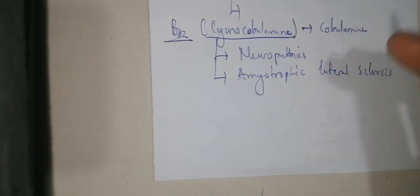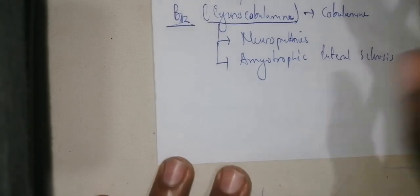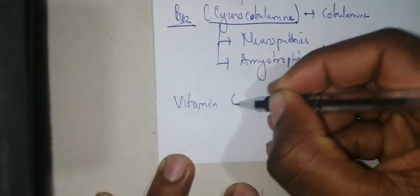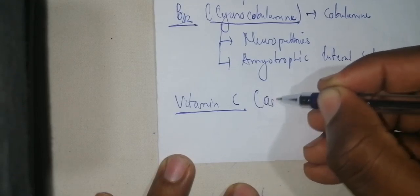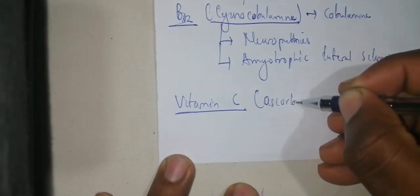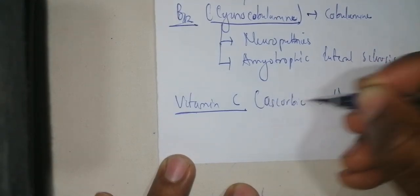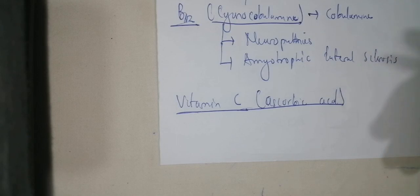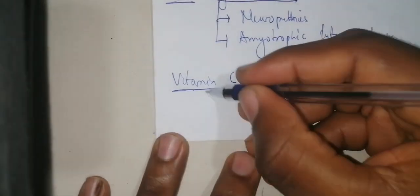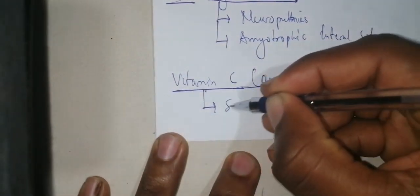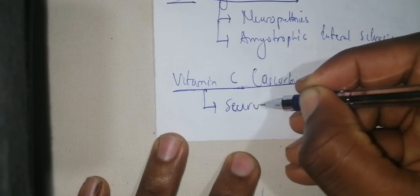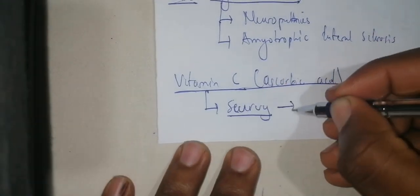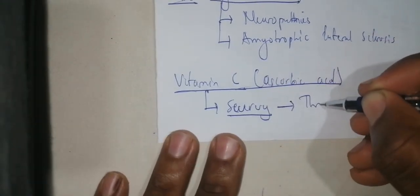After the vitamin B deficiencies, we move to vitamin C, also called ascorbic acid. When there is a deficiency of ascorbic acid, it results in a disease called scurvy. In scurvy, you have a problem with the production of thrombocytes.